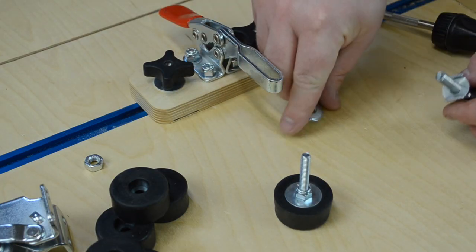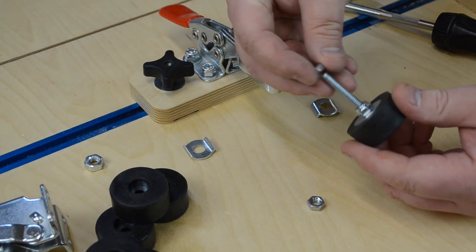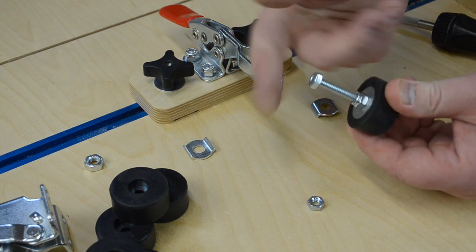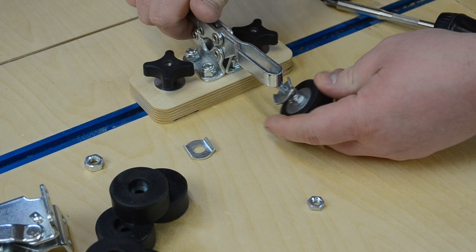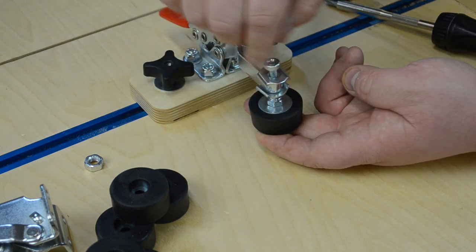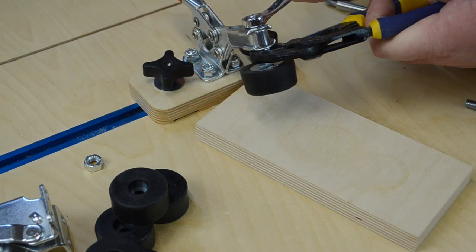Loosen up the old rubber foot and remove it. Add a quarter 20 nut for adjustment on the new foot and install it into the toggle clamp. Secure that and tighten everything up.